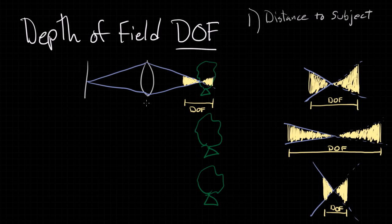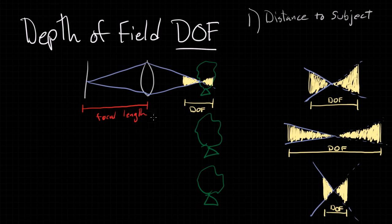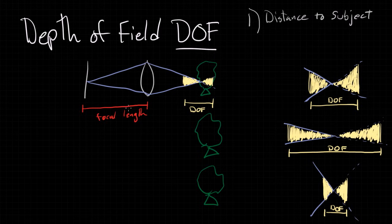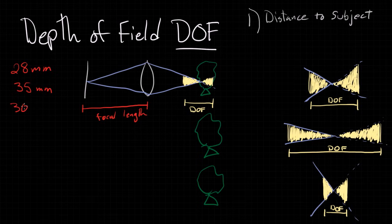Before we continue, I want to explain something. This distance from the lens to the film is called focal length. I'm going to do a whole separate video about focal length because it's really its own subject. But you should know that the distance from the film to the center of the lens is the focal length, and you'll see this measured in millimeters. For instance, your lens might have a rating saying it's a 28mm lens, a 35mm lens, or a 300mm lens — and what that's referring to is this distance.